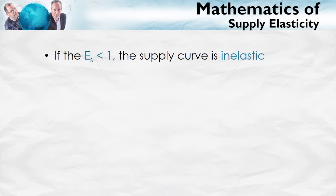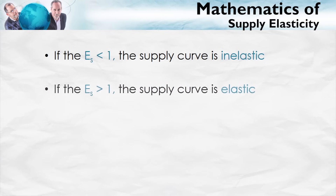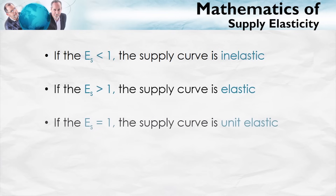As with the elasticity of demand, if the elasticity of supply is less than 1, the supply curve is said to be inelastic. If it's greater than 1, the supply curve is elastic. If it's equal to 1, it's unit elastic.